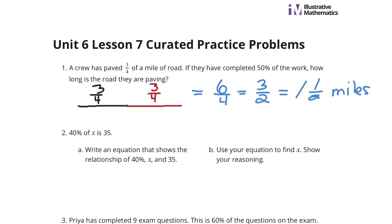Question two, 40% of x is 35. Write an equation that shows the relationship of 40%, x, and 35. Well, 40% as a decimal is 0.40, or simply 0.4, 40-hundredths or four-tenths. We're going to take that four-tenths, that's simpler, times x, and that's going to equal the 35. Now use your equation to find x. Show your reasoning.